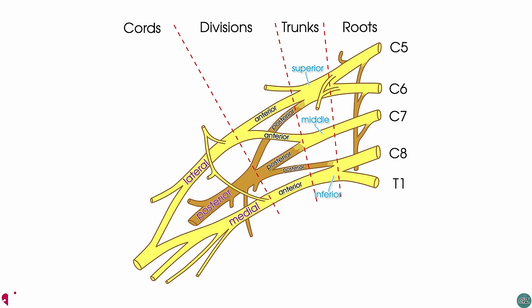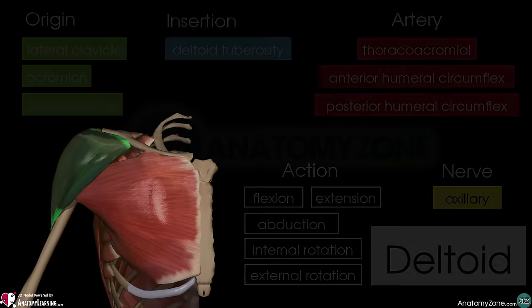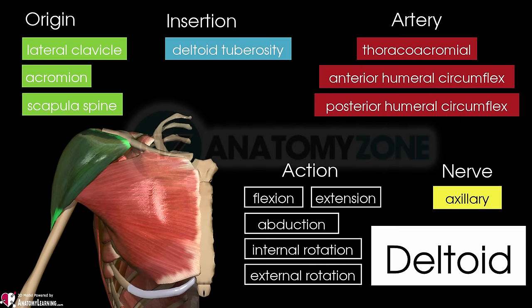It is innervated by the axillary nerve which arrives from the posterior cord of the brachial plexus. So that's the anatomy of the deltoid muscle.